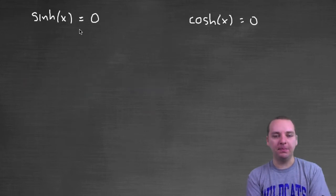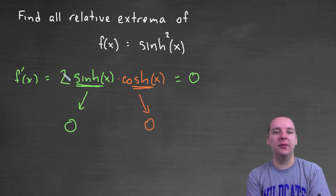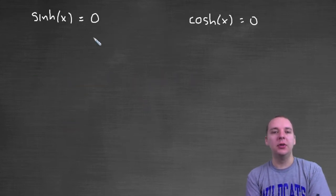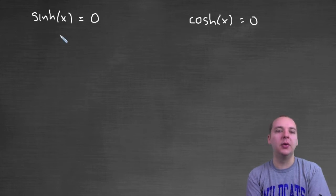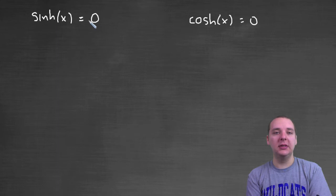I went ahead and set that up here. The two is somewhat irrelevant because two is a constant, two will never be zero. When you set this expression equal to zero, you could divide both sides by two. We don't need the two. But where is this equal to zero, and where is this equal to zero?